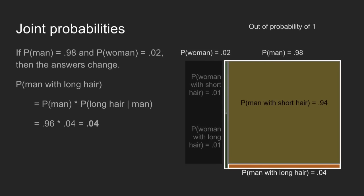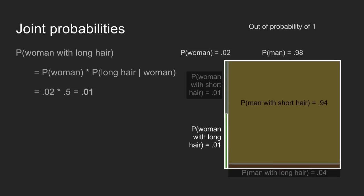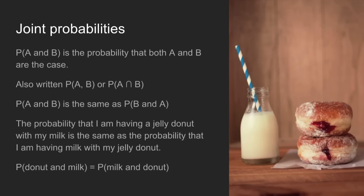We can do this for the men's restroom too. The probability that someone is a man and has long hair is 4%; a woman and has long hair is 1%. Joint probabilities are different from conditional probabilities: the probability that A and B is the case equals the probability that B and A is the case. So the probability that I'm having a jelly donut with my milk is the same as having milk with my jelly donut — we can swap the order.